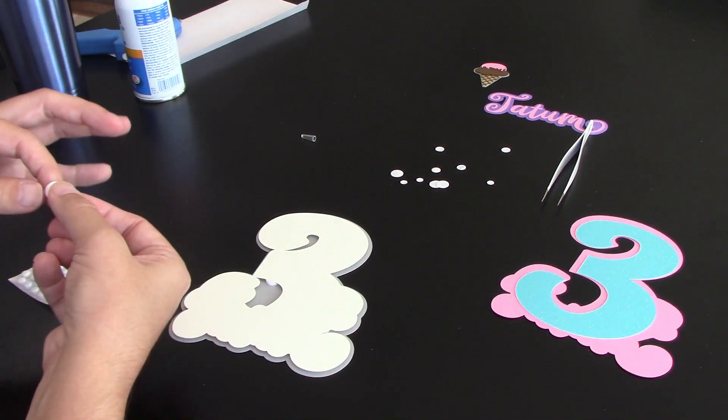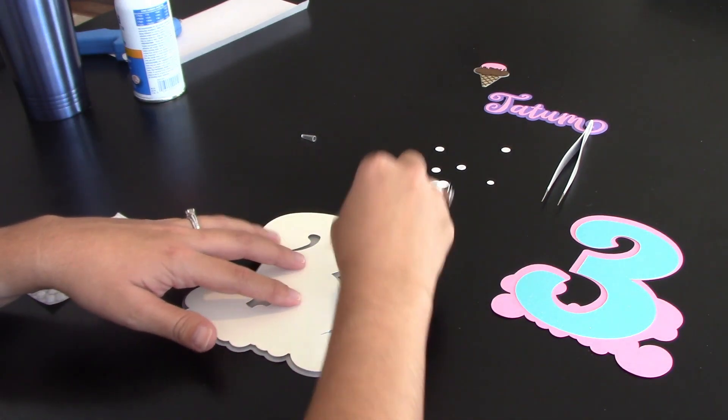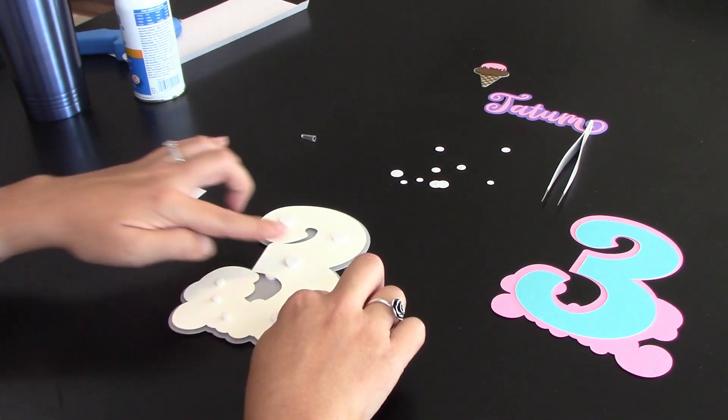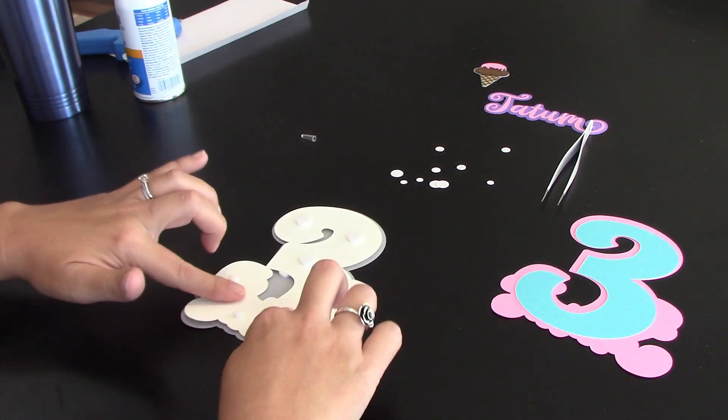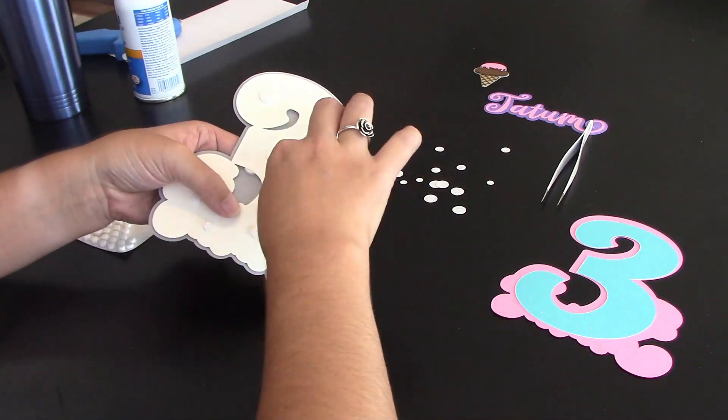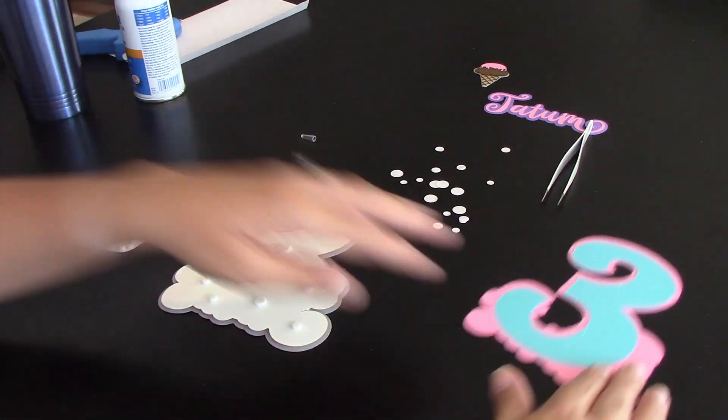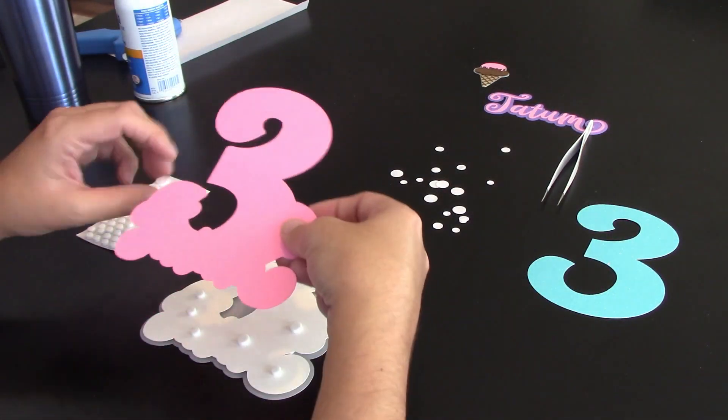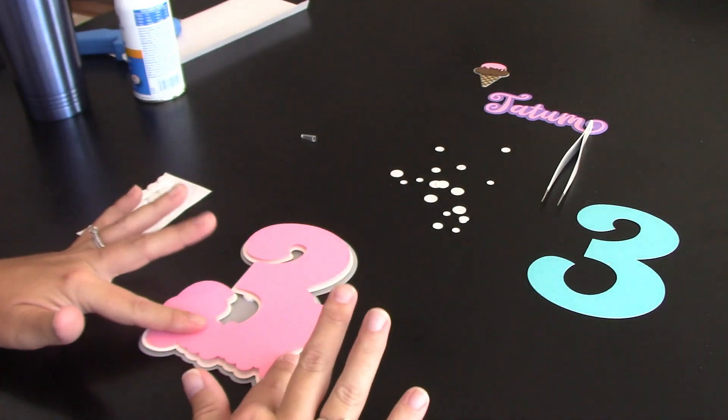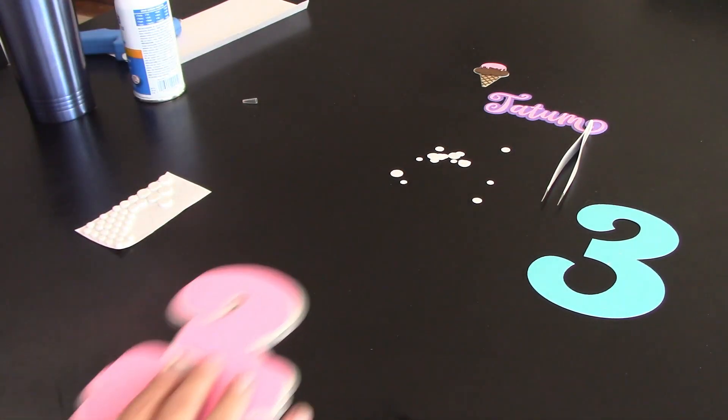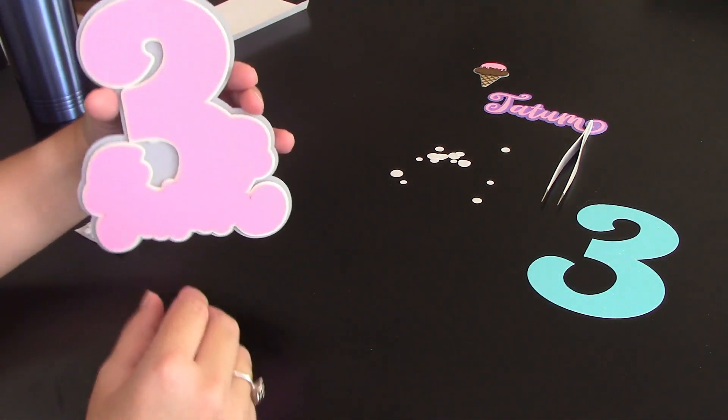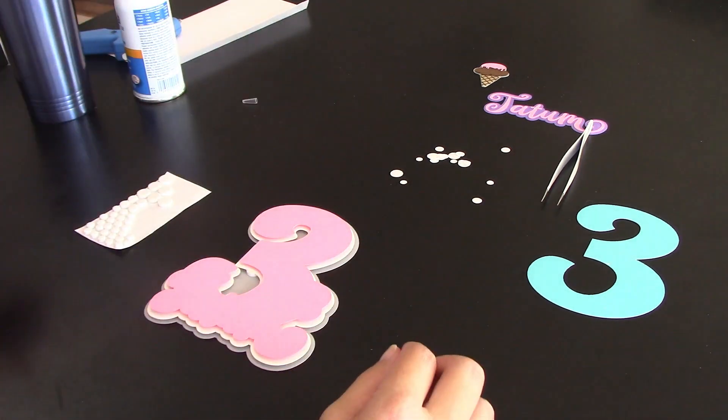So now it's time to put the pink on. So again, we're going to place our dots. Kind of push these down and then start peeling off their tops. Now it's time to put the pink down. So that one's on and you can see we're already getting that 3D look and feel to this thing. It's going to look really nice when we're done.